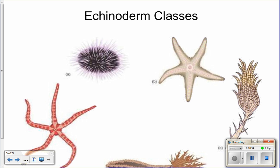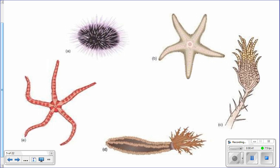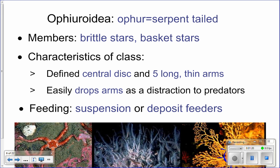This picture represents the five different classes of echinoderms you need to know, along with their class characteristics — just like you did for mollusks and arthropods. Make a chart listing phylum Echinodermata characteristics and the different classes. The five classes are: Ophiuroidea (brittle stars and basket stars), Echinoidea (sea urchins and sand dollars), Asteroidea (sea stars), Crinoidea (feather stars and sea lilies), and Holothuroidea (sea cucumbers).